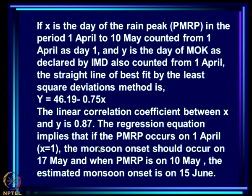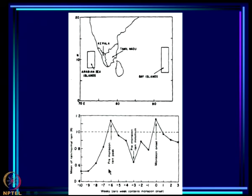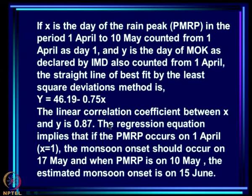They went further, trying to see whether the onset date could be predicted. Every year the dates vary — both the PMRP and the onset — so one can ask: is the onset date related to the date of the pre-monsoon peak? They defined X as the day of the rain peak in the period April 1st to May 10th (counted from April 1st as day one) and Y as the day of MOK as declared by IMD, also counted from April 1st.